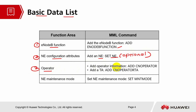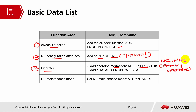For the operator section, we need to add the operator information — add CN operator. If the operator level is a primary operator, then you have to assign it as a primary operator. You also have to include the MCC and MNC information — mobile country code and mobile network code — under the CN operator. CN operator TA will be known as a tracking area, which is basically the tracking area code that will be bound at the cell level later.